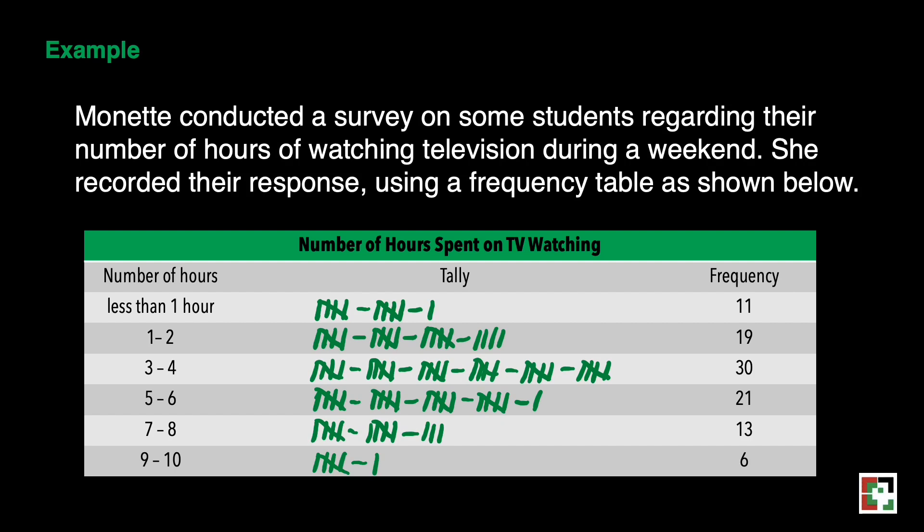Number 1: most students spent 3–4 hours watching TV during weekends. Second, the least number of students spent 9–10 hours watching TV. Third, there are 120 students who were surveyed. And fourth, 60 out of 120 students spent less than 4 hours watching TV. This represents 50% of the entire students' population surveyed.